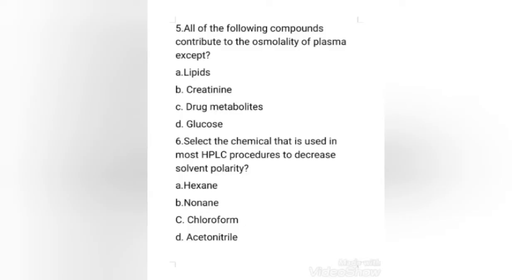Next question: select the chemical that is used in most HPLC procedures to decrease solvent polarity. Options: hexane, nonane, chloroform, or acetonitrile. The right answer is option D, acetonitrile.